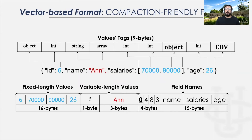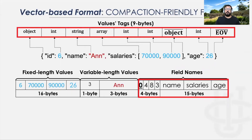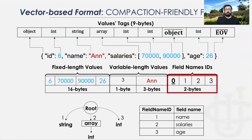We refer the audience to our paper for more details. In the vector-based format, the tags and the field names are basically the record metadata. To infer the schema, we only need to scan those two vectors without touching the values, which makes the schema inference process easy and efficient. The compaction process consists of replacing the field name strings with field name IDs, which can be done efficiently without impacting the ingestion performance.